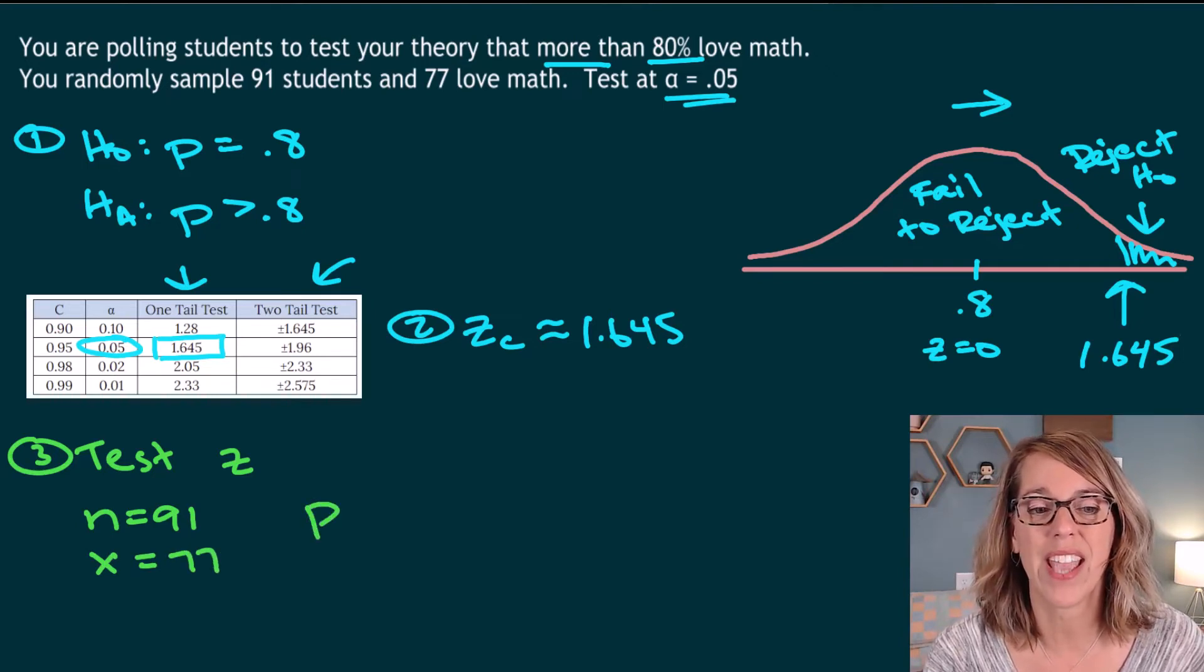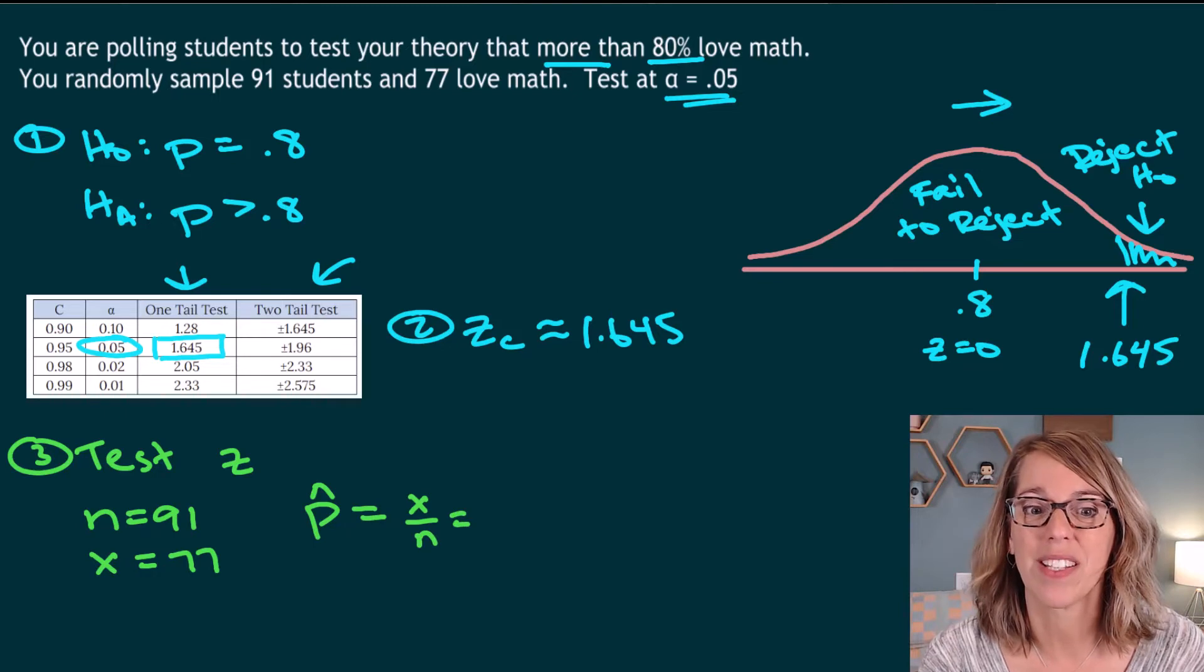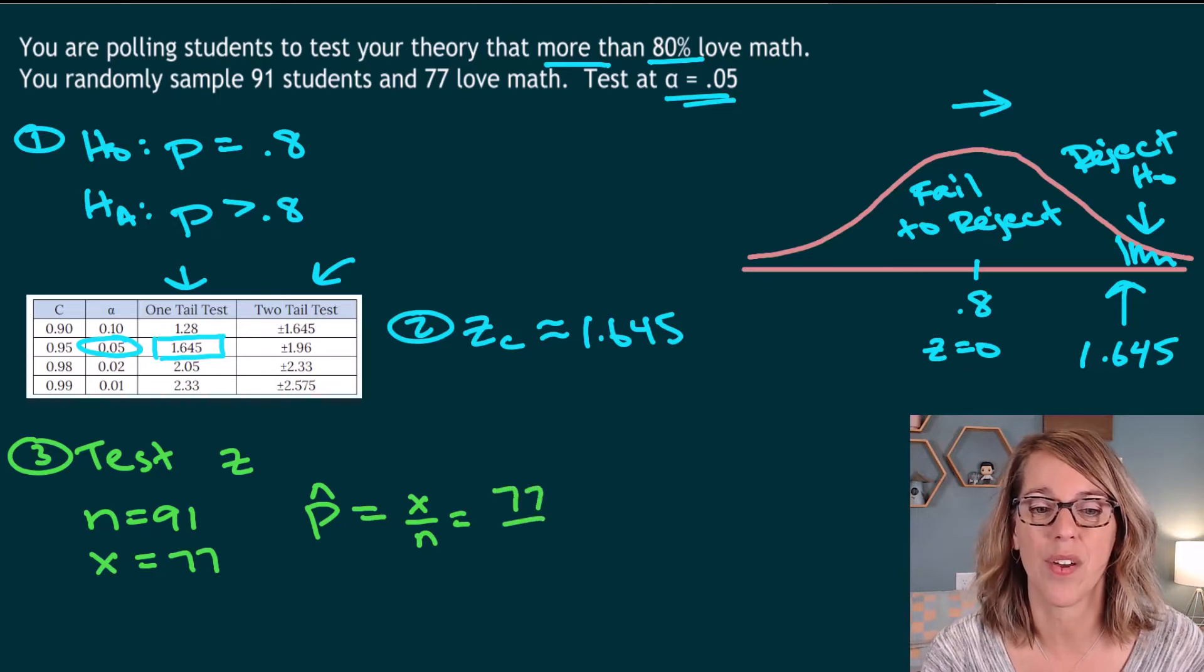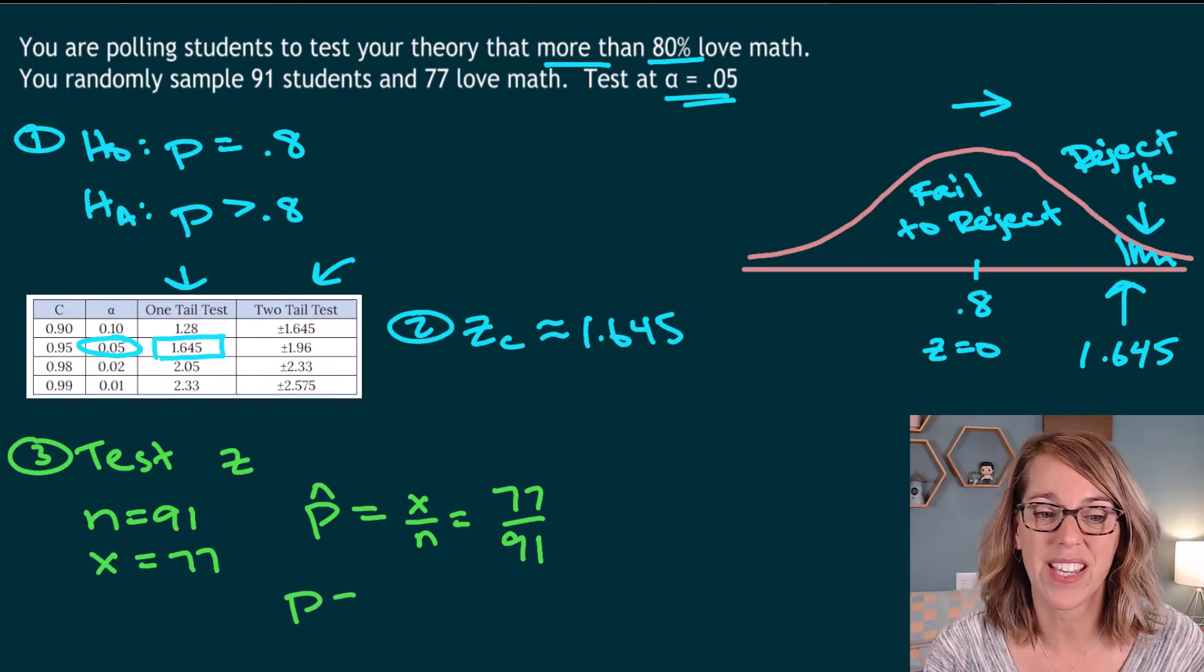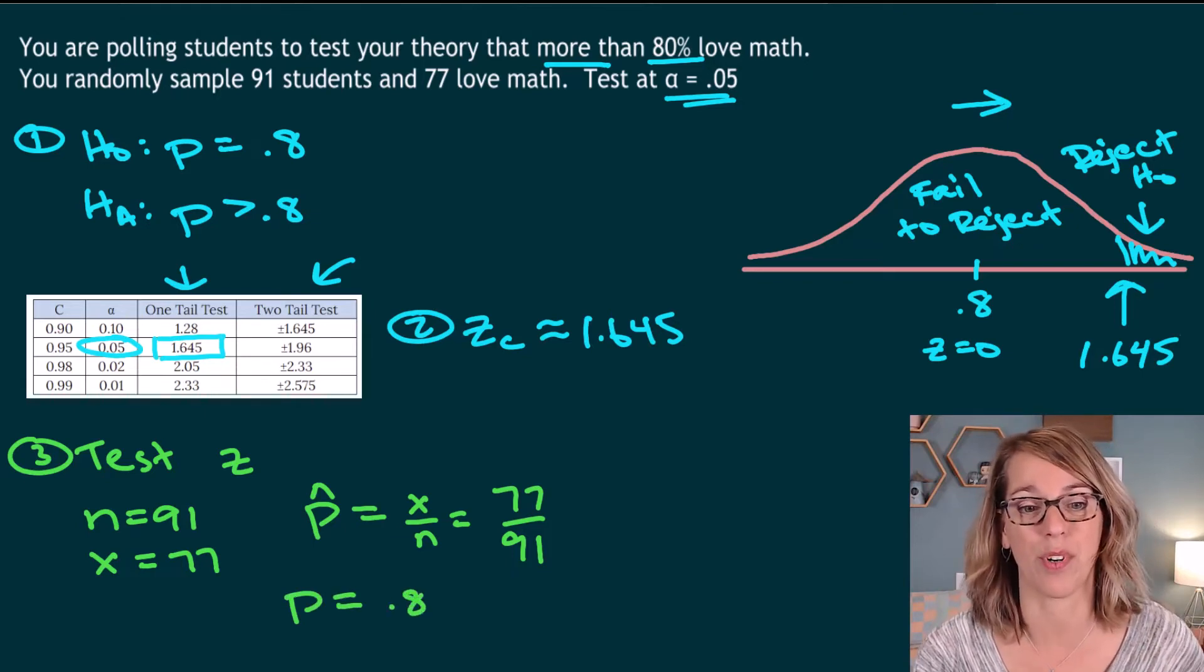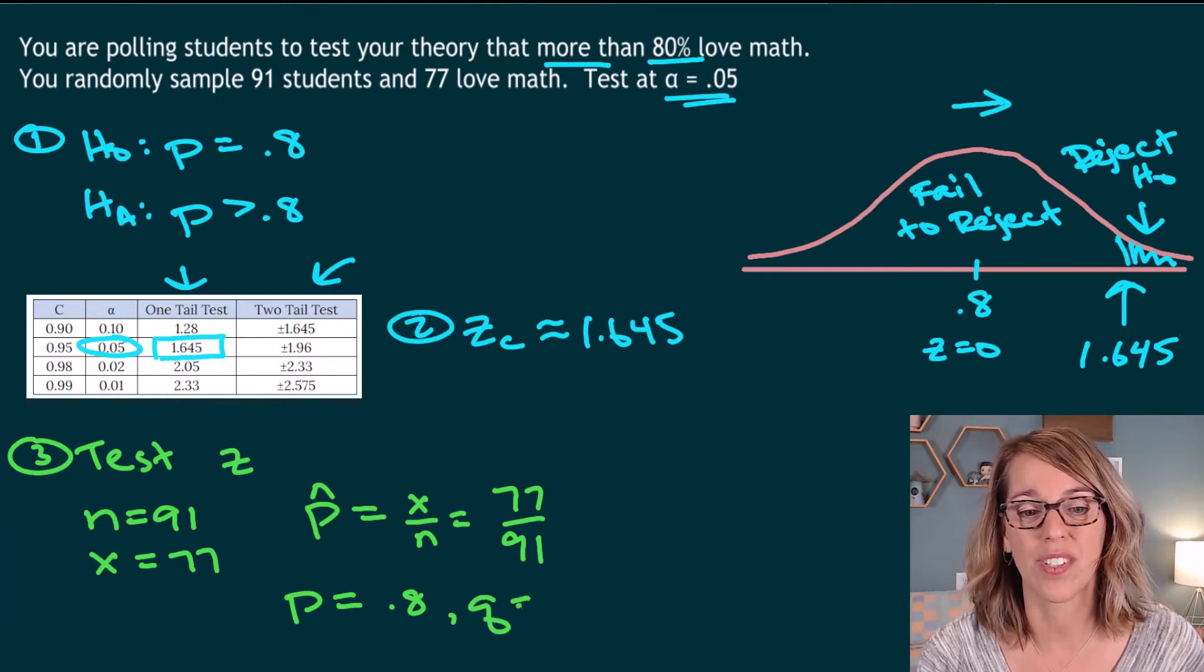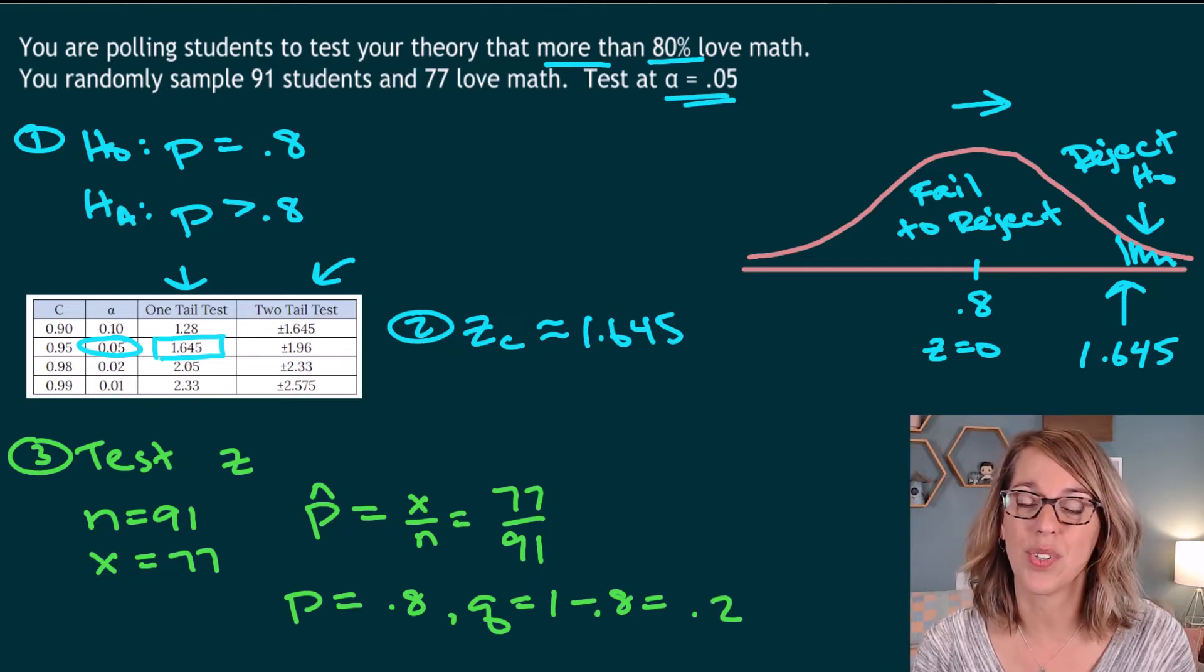These two together give me P hat, which is my sample proportion. P hat in general is X over N. So for my sample, that's going to be 77 over 91. We also have that P is equal to 0.8. That's our hypothesized proportion. So Q is going to be one minus 0.8, and that's going to give us a 0.2.